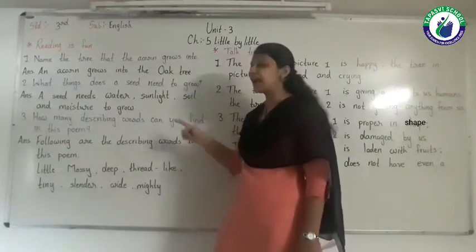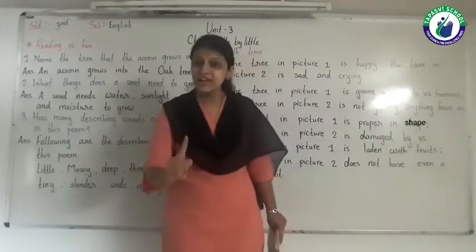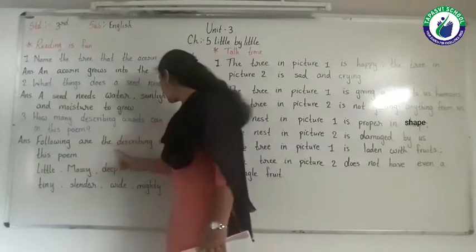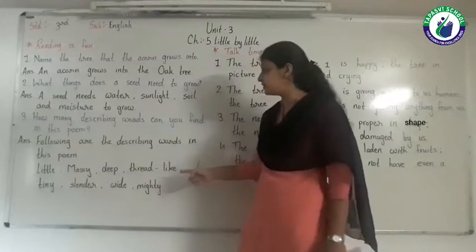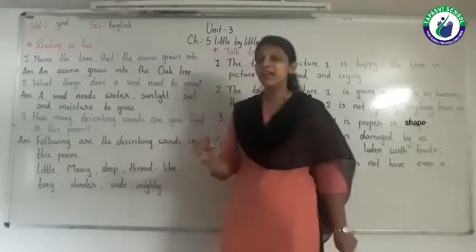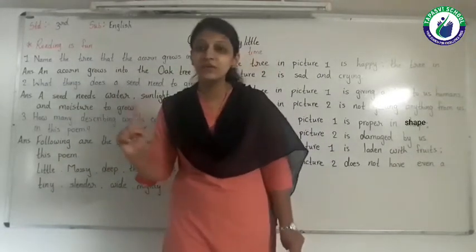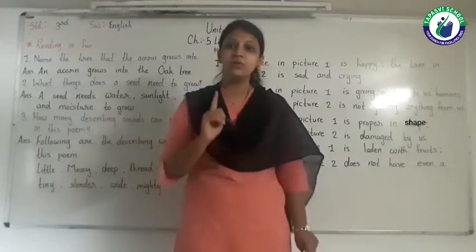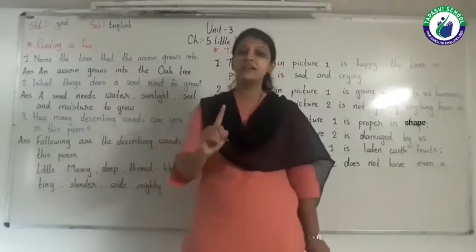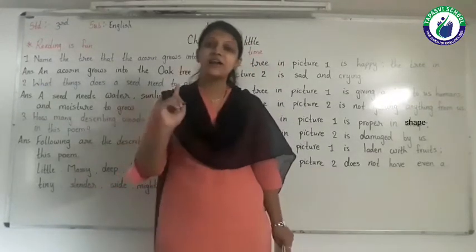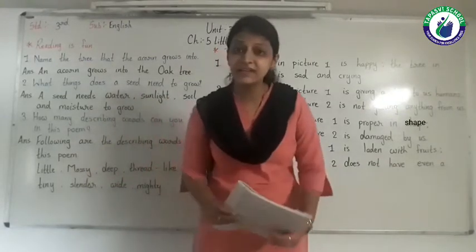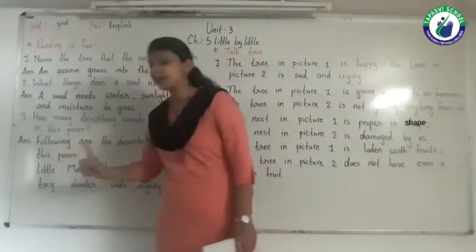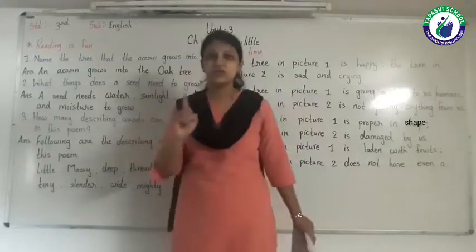Number 3: How many describing words can you find in this poem? I will tell you the answer. Following are the describing words in this poem. The first describing word is 'little' - the word 'acorn' is a noun, and the word 'little' is a describing word, which we call an adjective. A describing word is an adjective - the word that describes a noun is called an adjective. So 'little' is an adjective and 'acorn' is a noun.